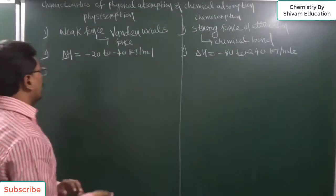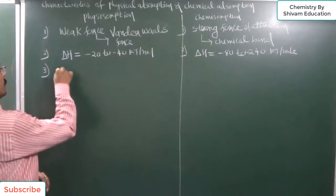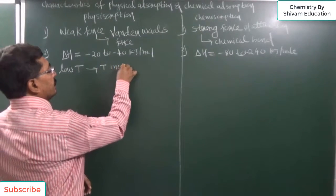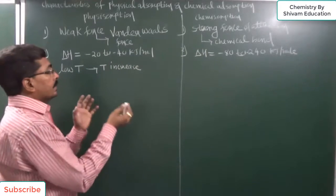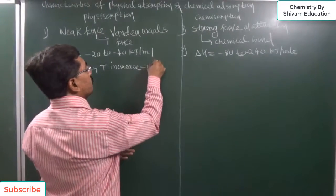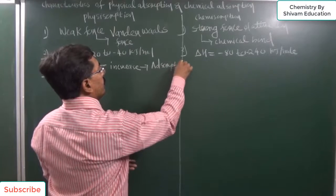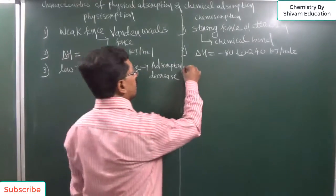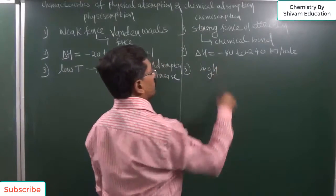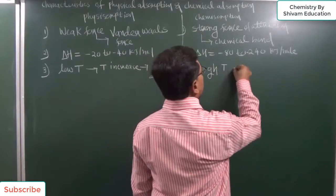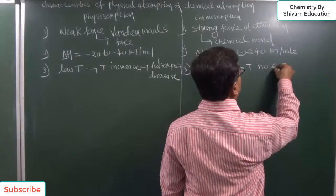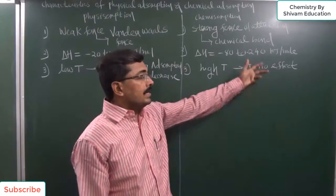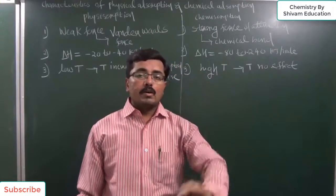Physical adsorption generally occurs at low temperature. When temperature increases, desorption takes place, so adsorption will decrease — low temperature is favorable for physical adsorption. In chemical adsorption, it occurs at high temperature, and temperature has no effect on adsorption after a strong bond is formed.